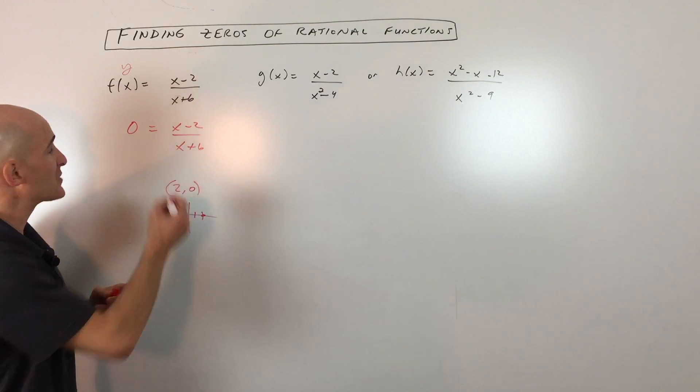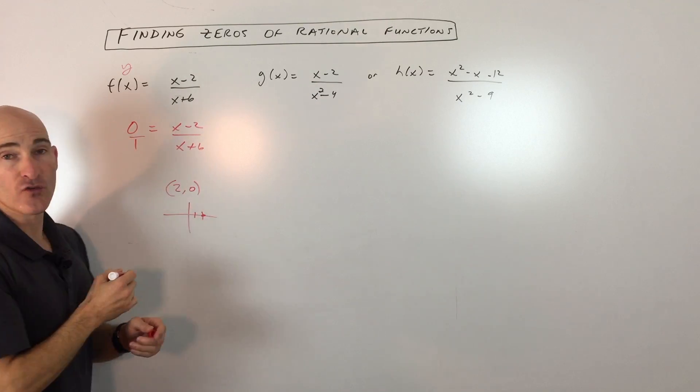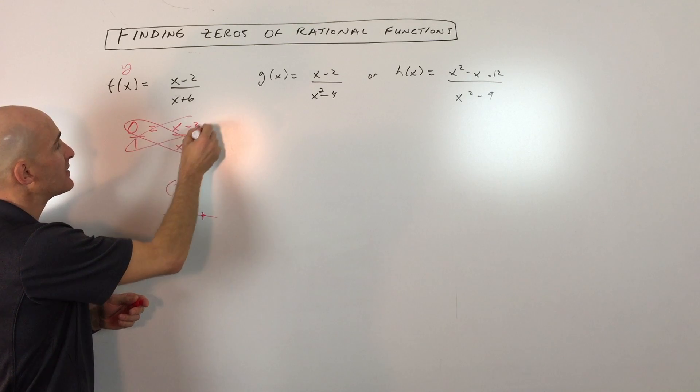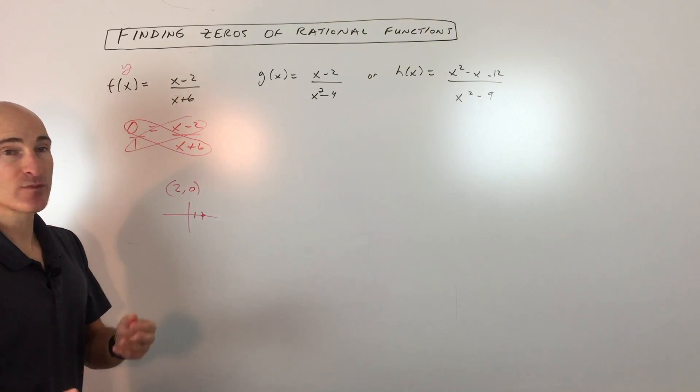If you don't like this method, what a lot of students will do is say zero is like zero over one. Then you can cross-multiply, cross that equal sign, just like working with a proportion.